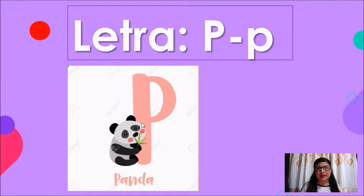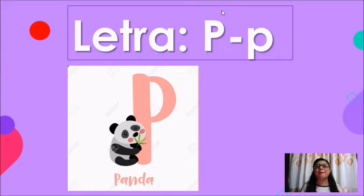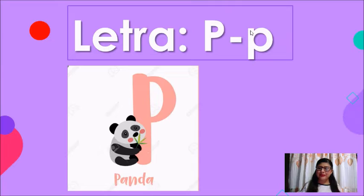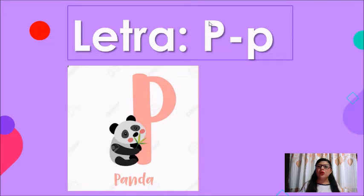Es muy importante que identifiquemos la forma de la letra P. Aquí arriba yo tengo dos P's: esta que estoy circulando es la letra P mayúscula, y aquí la que estoy circulando es la letra P minúscula. ¿Puedes ver cómo es su forma? La letra P es un palito muy derechito con una bolita.